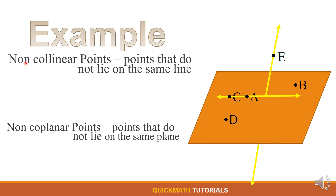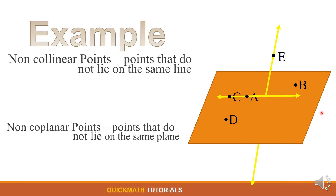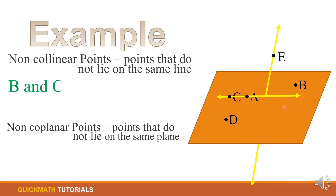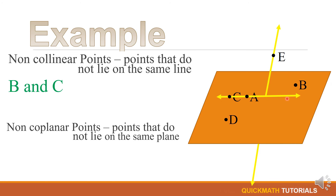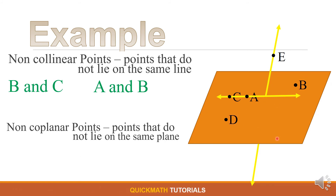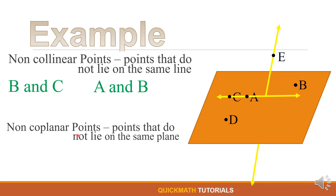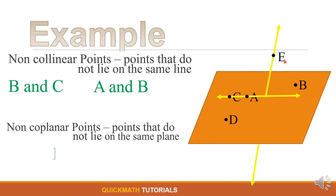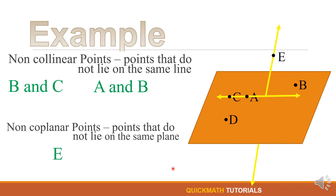Next, non-collinear points are points that do not lie on the same line. In our illustration, points B and C do not lie on the same line, so they are non-collinear. Other non-collinear pairs include A and B, C and D, A and D, or B and D. For non-coplanar points — points that do not lie on the same plane — the only point not on the plane is point E. So point E paired with point B, or point E with point C, gives us non-coplanar points.